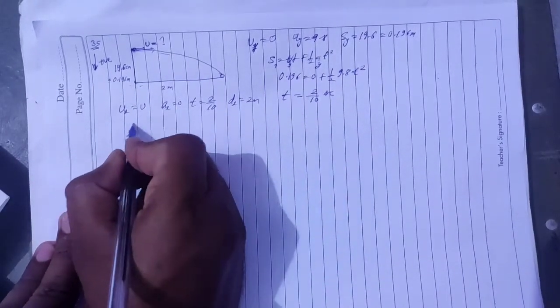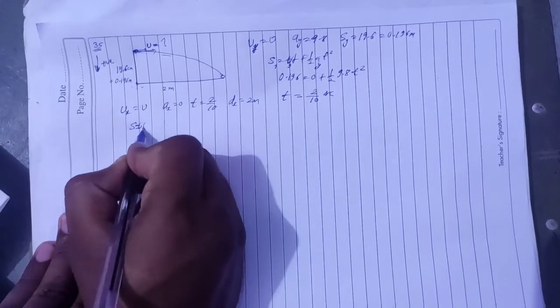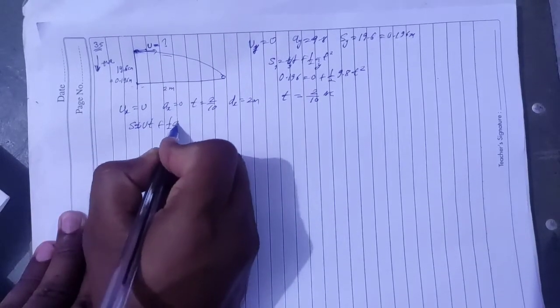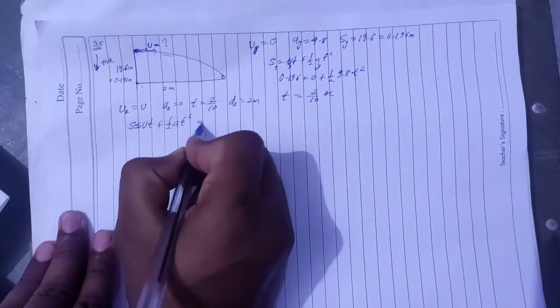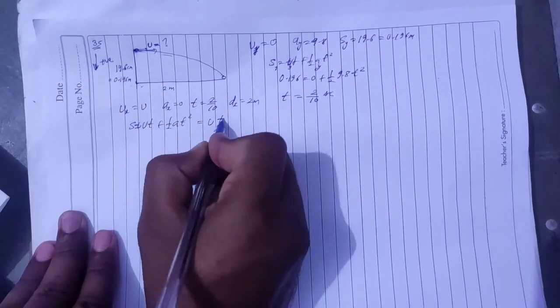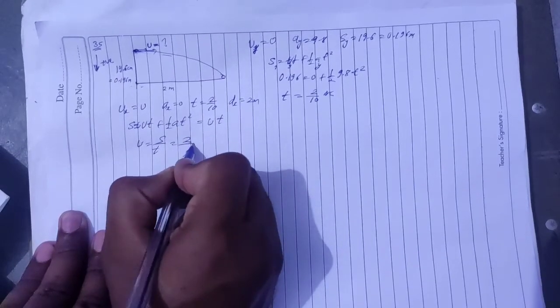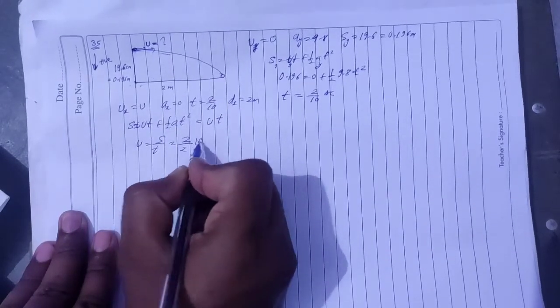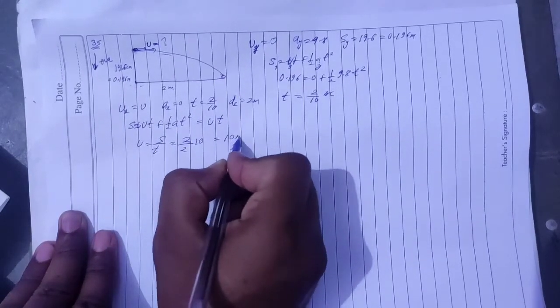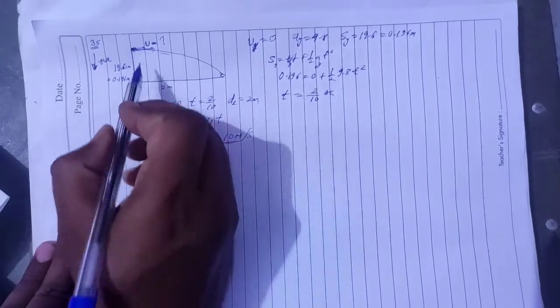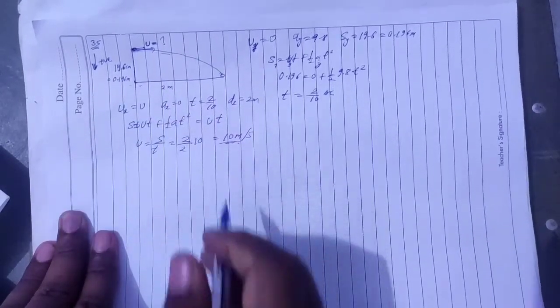s is equal to u into t. So s is equal to u into t, s by t. S kitna hai? 2 meter. T kitna hai? 2 by 10. Right? So yaha jaga 10 meter per second. Yianne, yaha goli ki speed kya hogi horizontally? 10 meter per second.